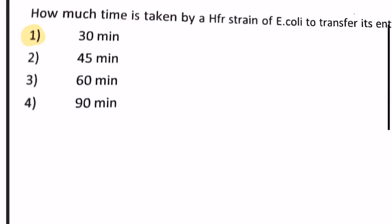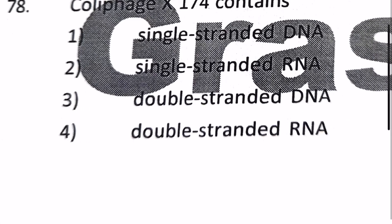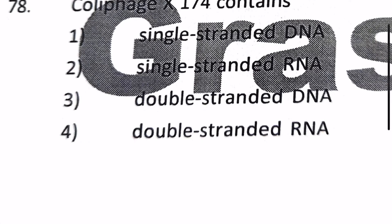Next qualifier: φ174 contains 1) single-stranded DNA, 2) single-stranded RNA, 3) double-stranded DNA, 4) double-stranded RNA. So our phage φ174 contains single-stranded DNA. So our answer is 1.